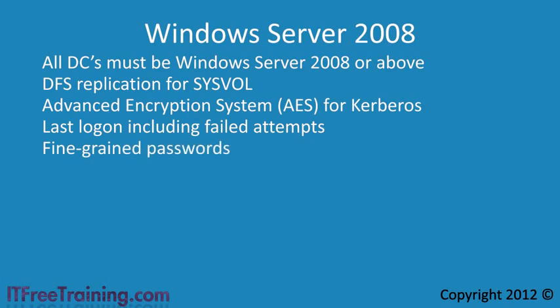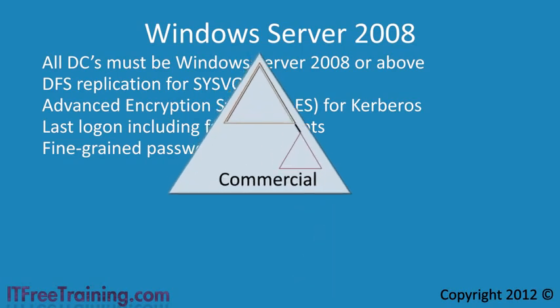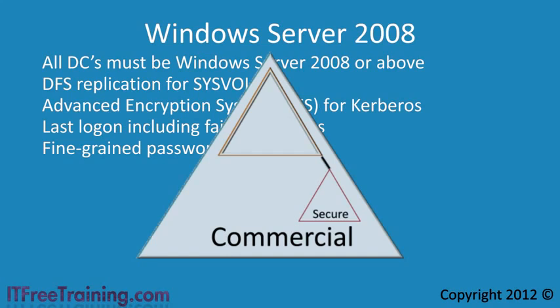The next feature is fine-grained passwords, which allows you to configure different password lengths and complexity requirements for different users. In the past, if you had a commercial network and a secure network, the only way a pre-Windows Server 2008 domain functional level could have different password requirements was to create separate domains. With Windows Server 2008 domain functional level, you can combine the two — the secure domain becomes simply another organizational unit in the same domain, and you assign different password requirements to each OU.